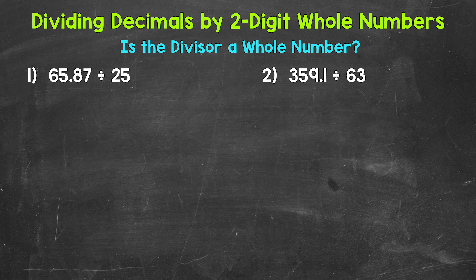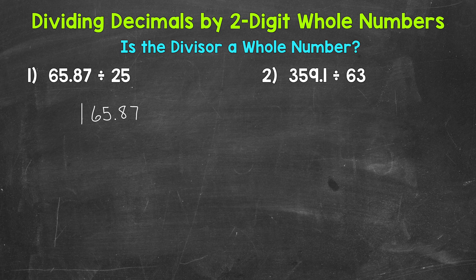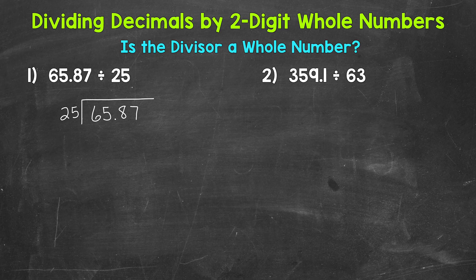Let's jump into number one, where we have 65 and 87 hundredths divided by 25. The first thing we need to do is set this problem up so we can go through the division process. 65 and 87 hundredths is the dividend, the number we are dividing, so that goes under the division bar. 25 is the divisor, the number we are dividing by, and that goes on the outside of the division bar. Whenever we have a division problem that involves decimals, we always need to check: is the divisor a whole number? If yes, we bring the decimal straight up into the answer — it's going to place the decimal for us. In number one, 25 is the divisor, so yes, we have a whole number, which means we bring the decimal straight up into the answer.